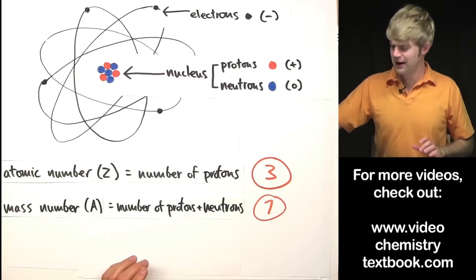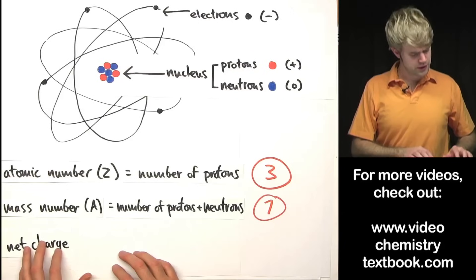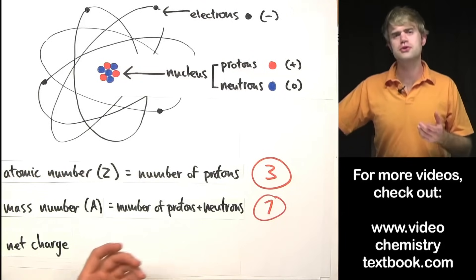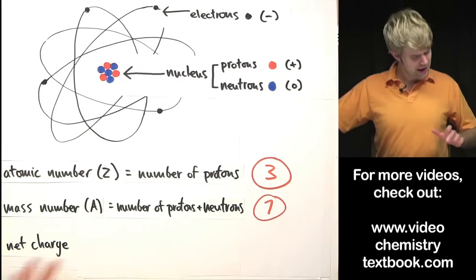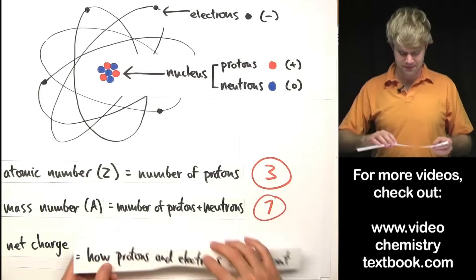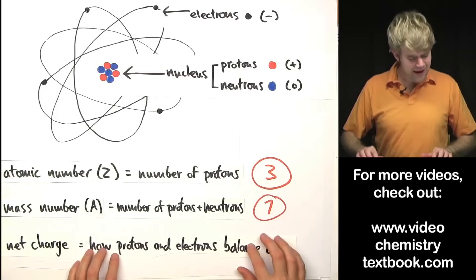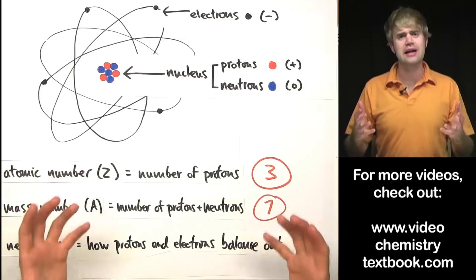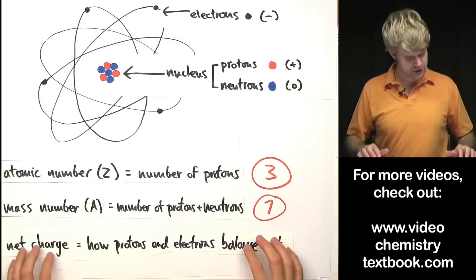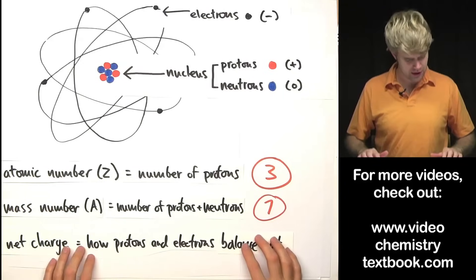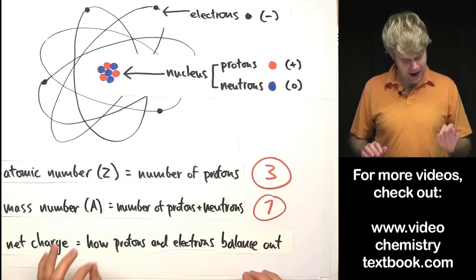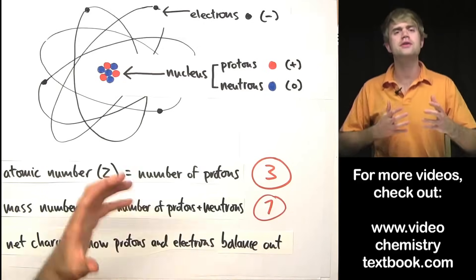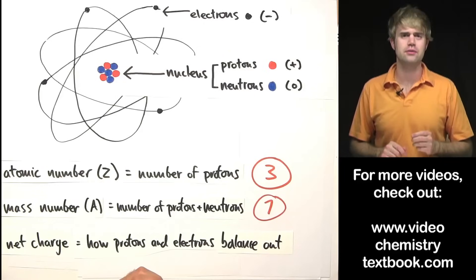Finally, the third characteristic we're going to talk about is probably the most complex, and that's called net charge. I don't have a great definition for it, so what I'm going to say is it's how protons and electrons balance each other out.